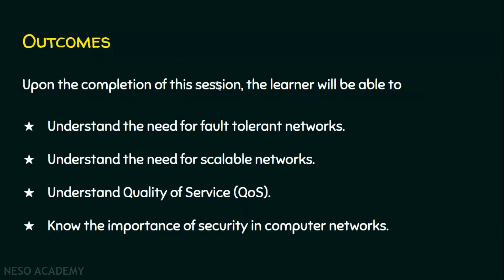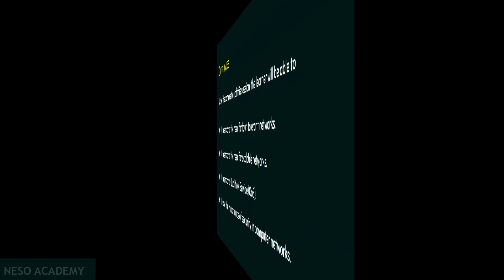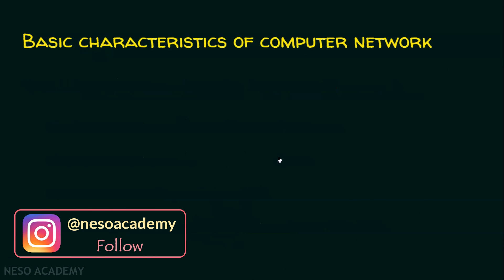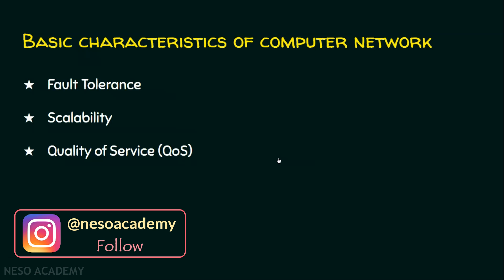Upon the completion of this session, we will be able to understand the need for fault tolerant networks and scalable networks. We shall understand what quality of service is, and we shall also understand why we need security in computer networks. There are four basic characteristics any computer network should possess: fault tolerance, scalability, quality of service, and security.